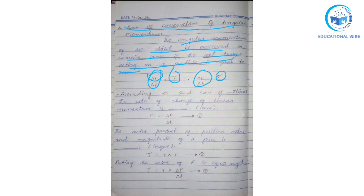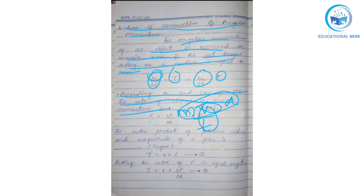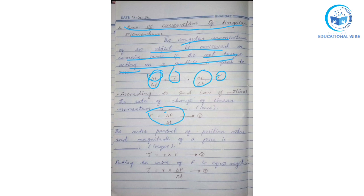Now, according to Newton's second law of motion, the rate of change of linear momentum is force. We write it mathematically as F = delta p / delta t. Since delta p = mv, and v / t = acceleration, we get F = ma. So the second law of motion tells us that the rate of change of linear momentum equals force.